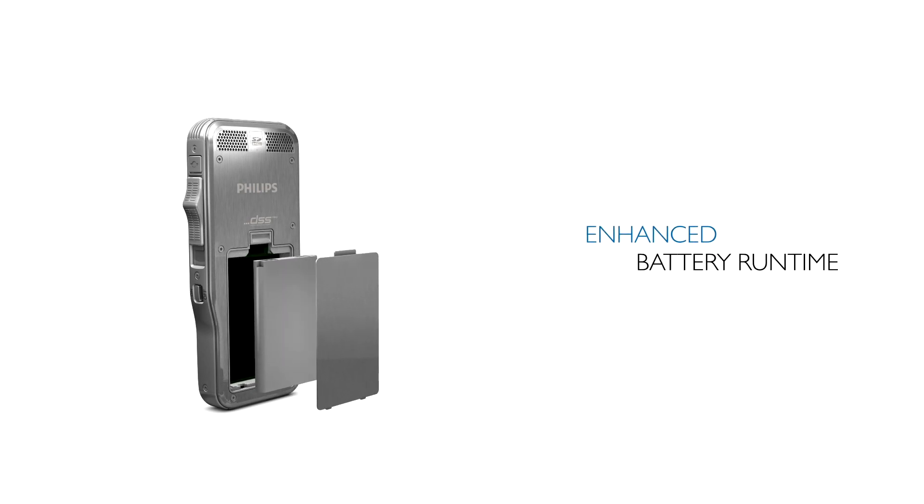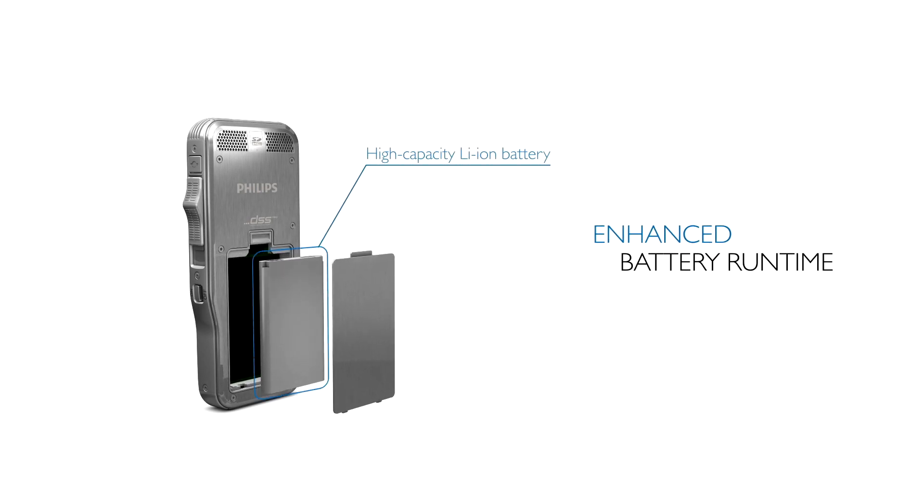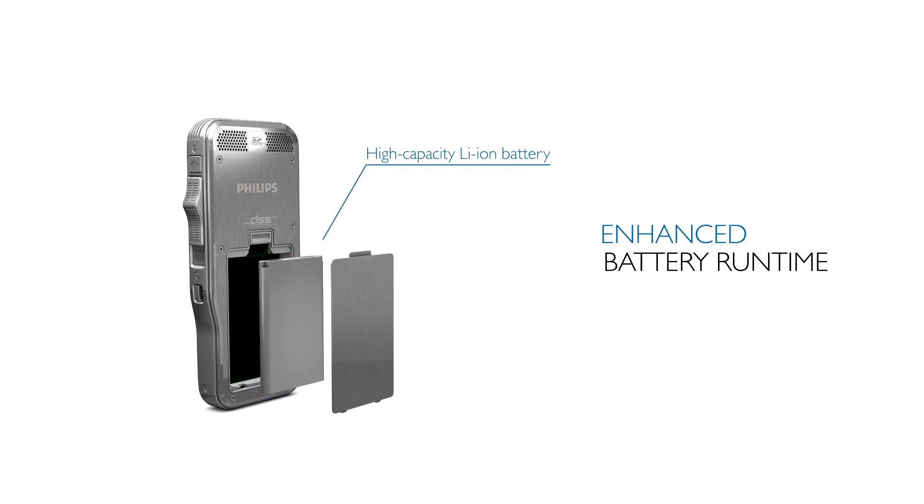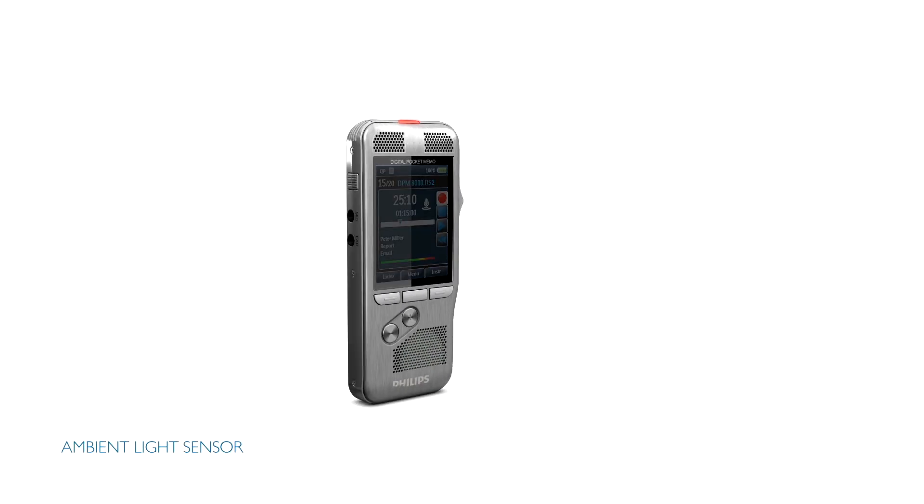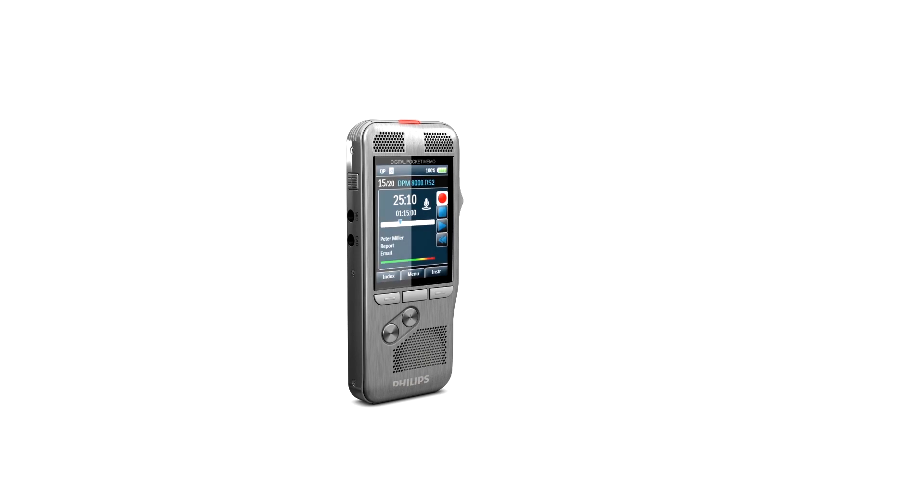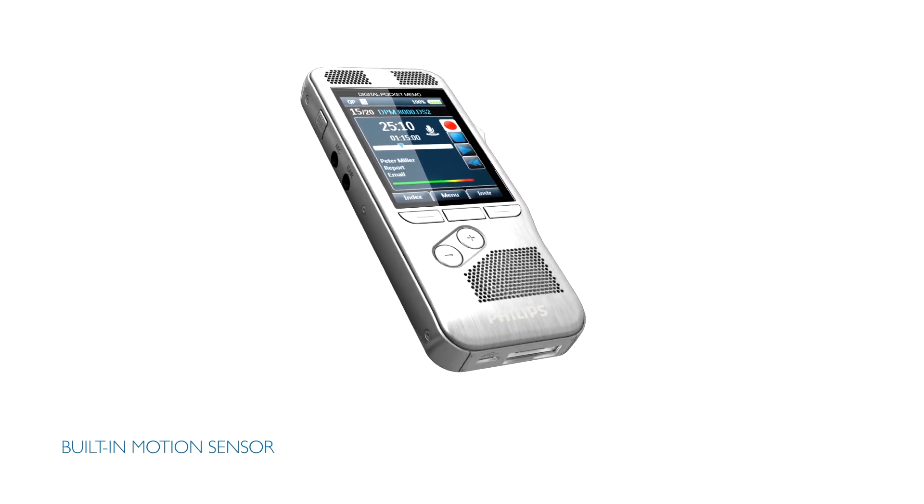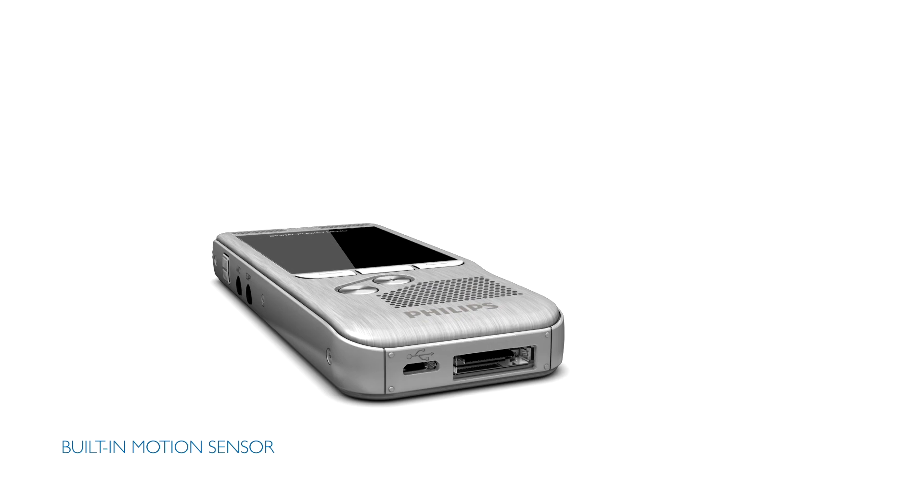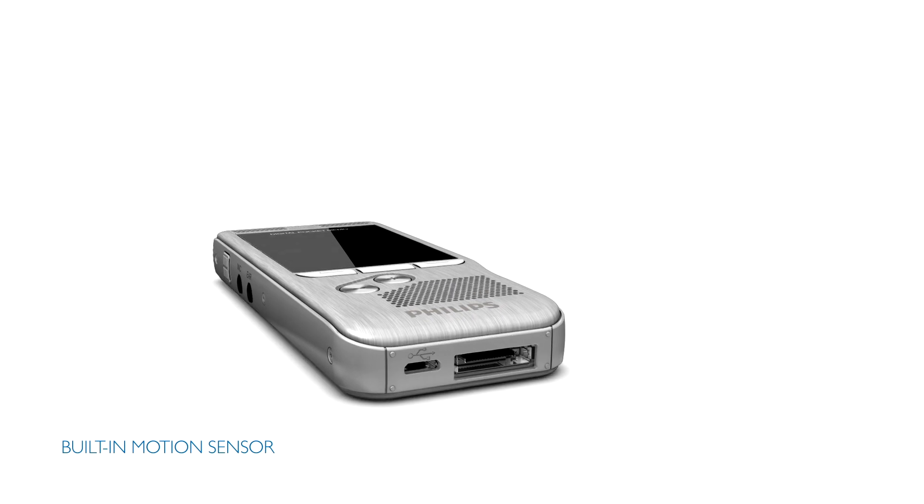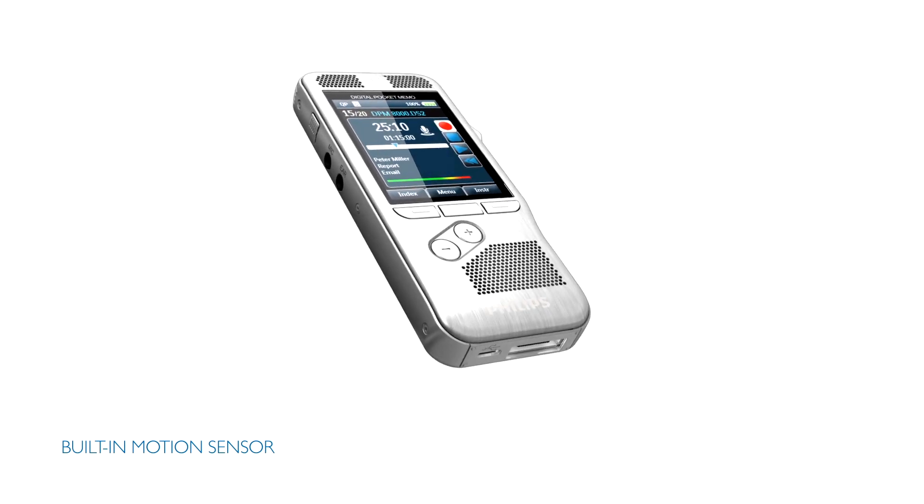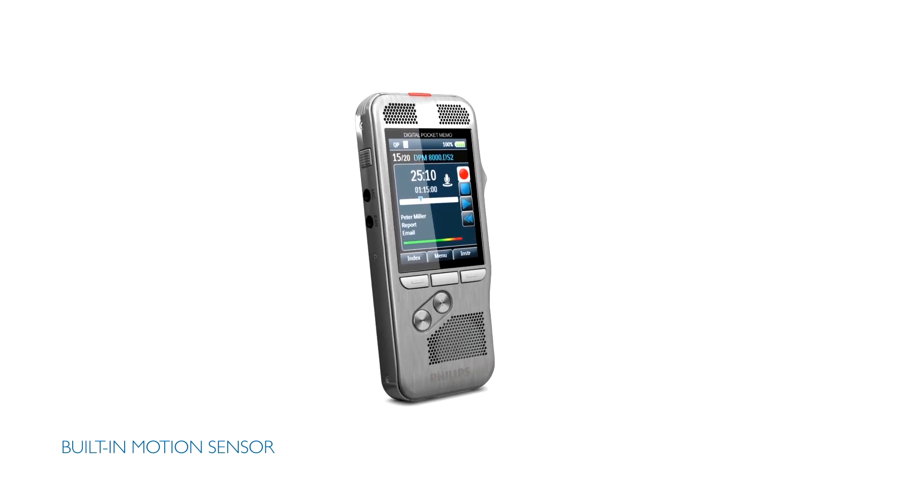The efficient battery, together with the light and motion sensor technology, maximizes run-time. The ambient light sensor adjusts the brightness of the display, and the motion sensor switches automatically into standby mode when the device is idle. Once the Pocket Memo is picked up again, it's ready to record within seconds.